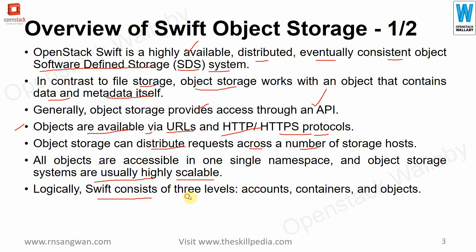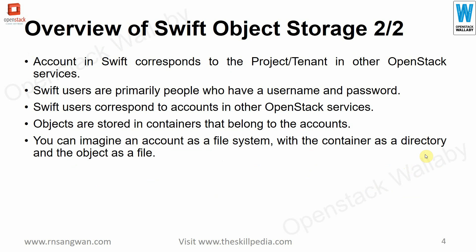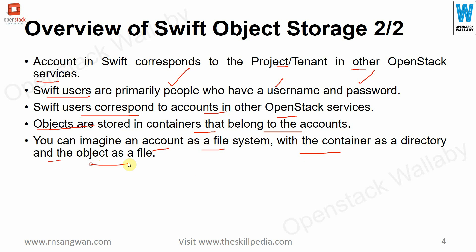Logically, SWIFT consists of three levels: Accounts, Containers, and Objects. In SWIFT, an account corresponds to the project or tenant in other OpenStack services. SWIFT users are people who have a username and password. Objects are stored in containers that belong to accounts. You can imagine an account as a file system, with a container as the directory and an object as a file or content inside that directory.